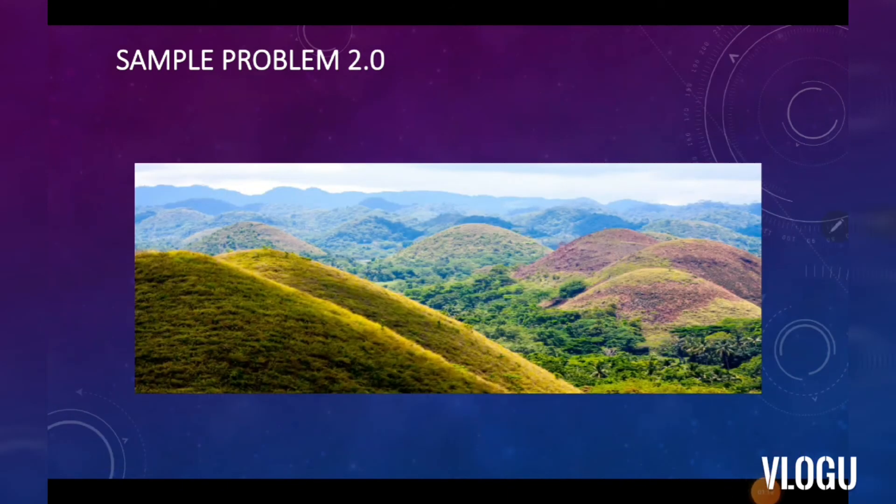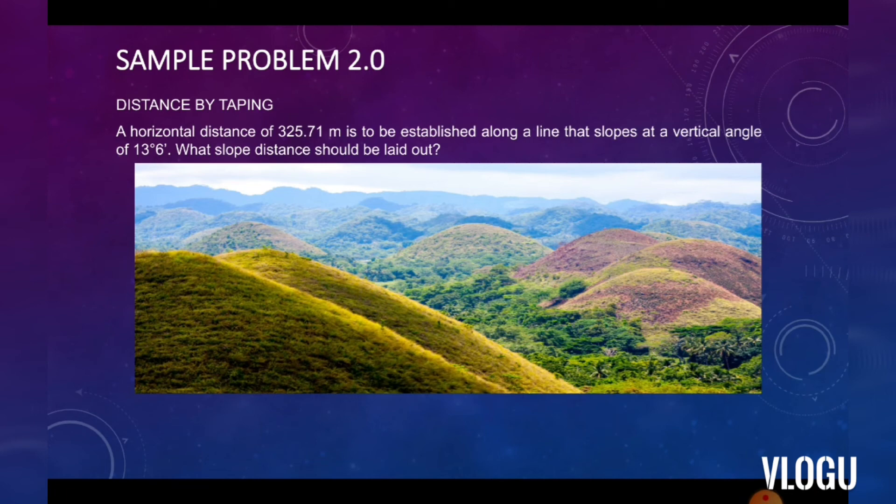The next sample problem is about distance by taping. A horizontal distance of 325.71 meters is to be established along a line that slopes at a vertical angle of 30 degrees 6 minutes. What slope distance should be laid out?